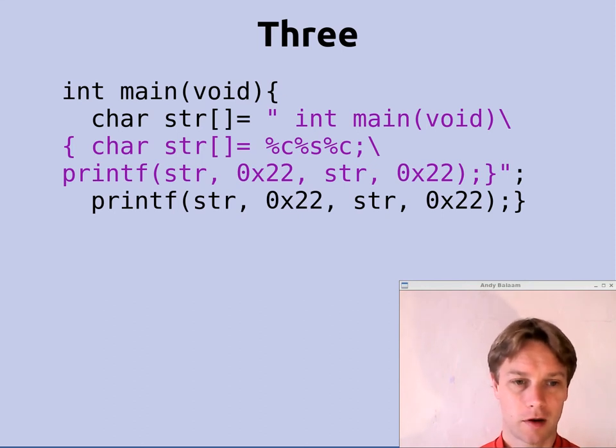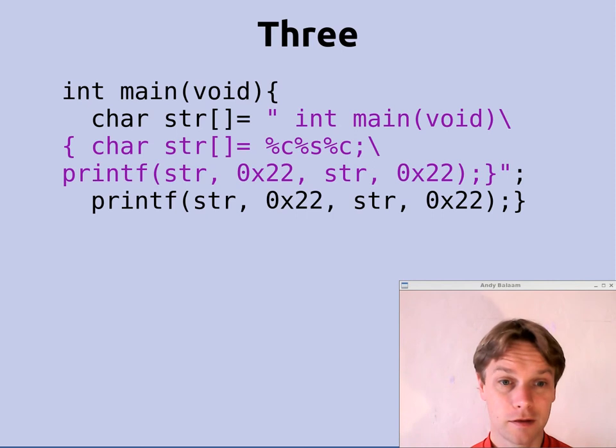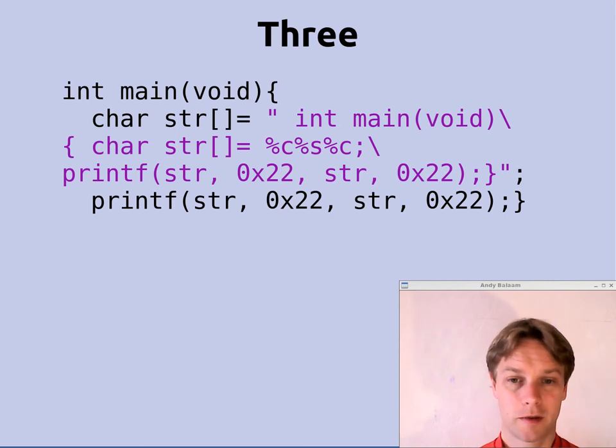That very last line of the program prints out that string but substitutes into itself itself and also substitutes in 0x22 a couple of times, which is a quote character. So that program will print out its own source code.